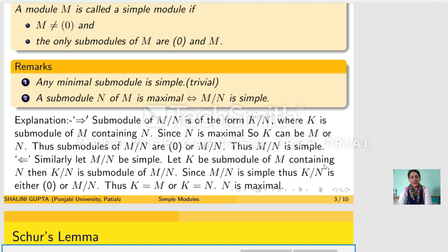Similarly, consider Z, the ring of integers. Z is a module over itself and its submodules will be the ideals of Z. Now there are so many ideals of Z other than 0 and Z. So if we consider Z as a module over itself, then it is not a simple module.